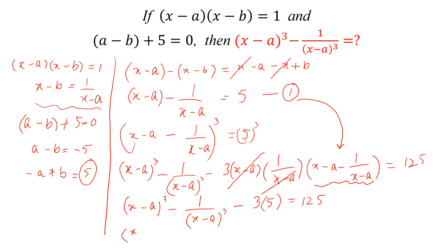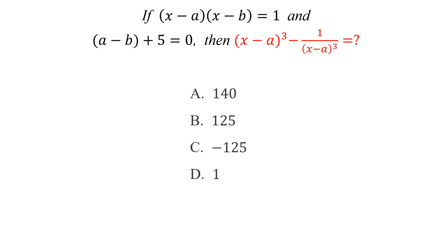Therefore, (x - a)³ - 1/(x - a)³ = 125 + 15 = 140. So the correct answer is 140. Like the video, share with your friends, and don't forget to subscribe to my YouTube channel. Thank you.